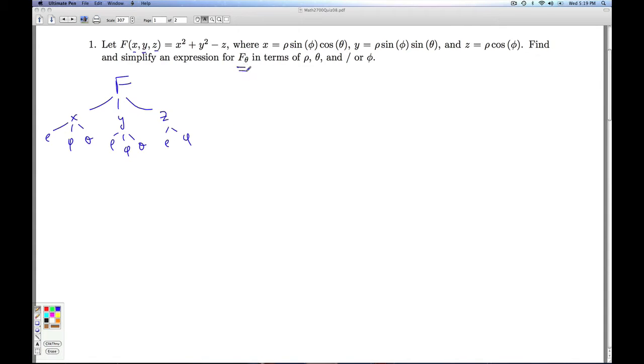I'm looking for an expression for f_theta. That's the partial derivative of f with respect to theta. And so I look and see, where is theta showing up? He's showing up here and here. So how do I go from f to theta? I go through x and I go through y. So I'm just going to ignore the z part. So we can start off with our chain rule. f_theta equals f_x x_theta plus f_y y_theta.